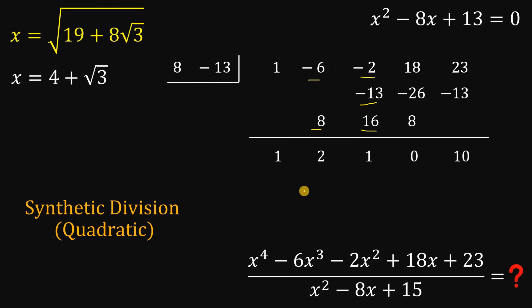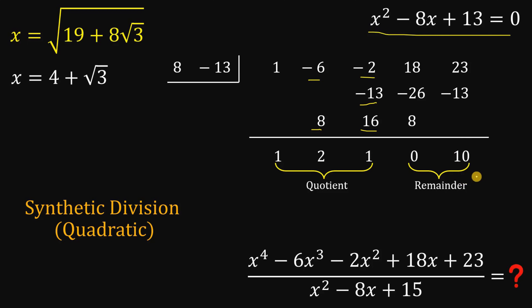From here, this part is the quotient and this part is the remainder. Since our divisor is quadratic, the remainder is linear. Surprisingly, the coefficient of x in the remainder is 0, so we don't have any variable x in the remainder.